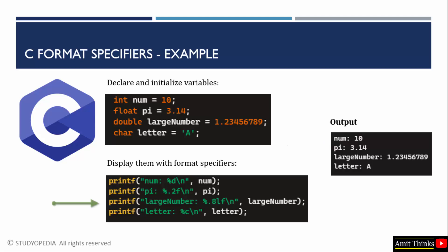For the third one, that is double. We have used %lf. Similarly, we have used .8 here. Like in float, we used .2.